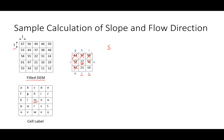Let's calculate the slope from M to S. The elevation of M is 22 and the elevation of S is 16, so 22 minus 16 divided by the distance between them. Since the cells are diagonally located, we use the square root of 1 squared plus 1 squared, which is 1.414. Doing this calculation gives us 4.24.